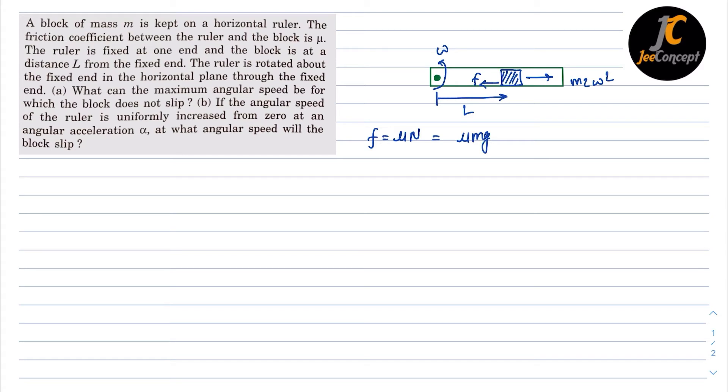So if this block is not skidding outward, then m l omega square should be equal to mu times m g. So m will cancel out. Omega square is equal to mu g by l. So the value of omega will become under root mu times g upon l. This is the solution for part a.